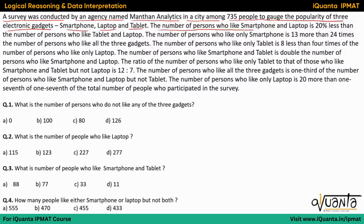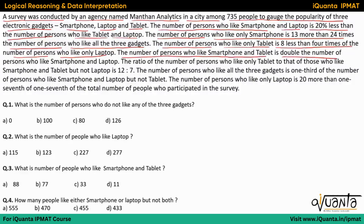The number of persons who like smartphone and laptop is 20% less than the number of persons who like tablet and laptop. The number of persons who like only smartphone is 13 more than 24 times the number of persons who like all three gadgets. The number of persons who like only tablet is 8 less than 4 times the number of persons who like only laptop. The number of persons who like smartphone and tablet is double the number of persons who like smartphone and laptop.